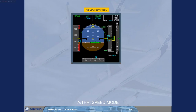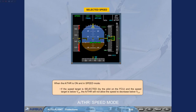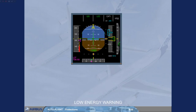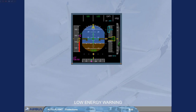When the autothrust is on and in speed mode, if the speed target is selected by the pilot on the FCU and the speed target is below VLS, the autothrust will not allow the speed to decrease below VLS. If, for any reason such as turbulence, shear, or autothrust off, the aircraft speed drops significantly below VLS, a repetitive 'speed, speed, speed' oral warning is automatically triggered by the PRIM. It drives the pilot's eyes to the speed scale, so as to readjust thrust, for example.